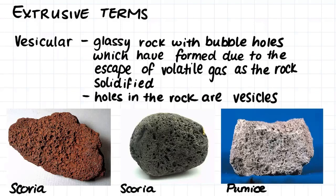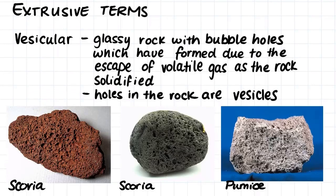Scoria and pumice can further be described as vesicular rocks, just like tachylite. Vesicles are small bubble holes in the rock, and these form when a molten mix has a large amount of volatile gas in it. When the magma reaches the surface and the rock solidifies very quickly as the gas is being released, this leaves bubble holes in the rock. Pumice is a felsic vesicular rock, while scoria is a mafic vesicular rock.